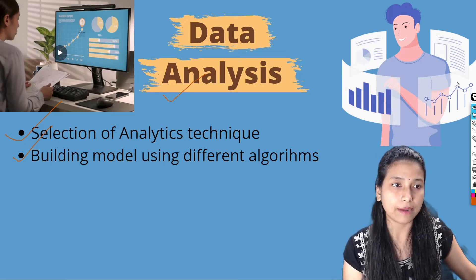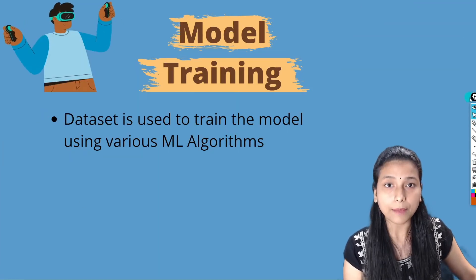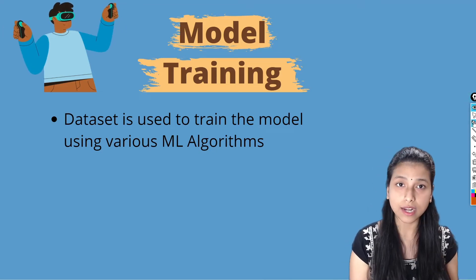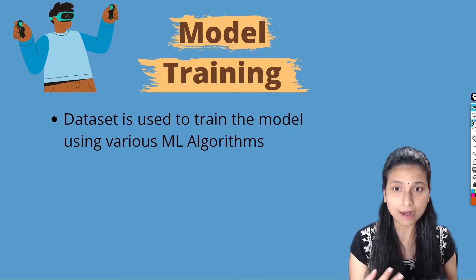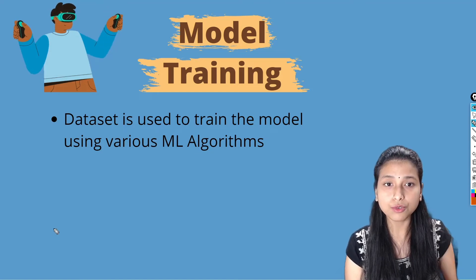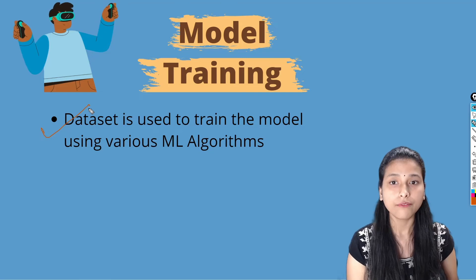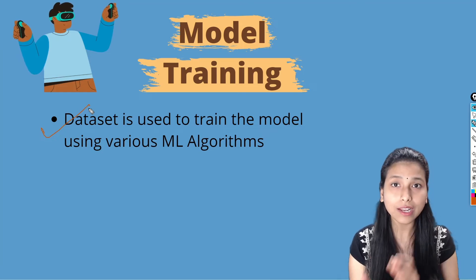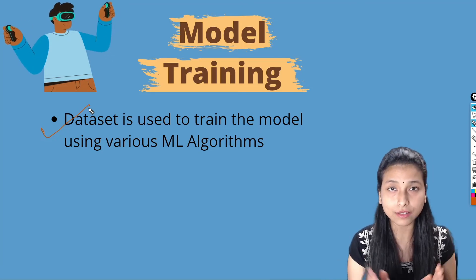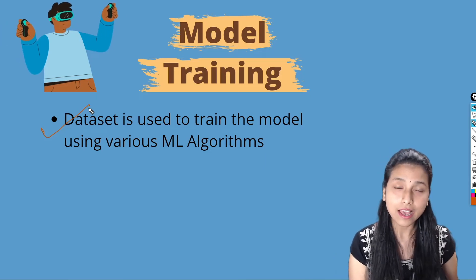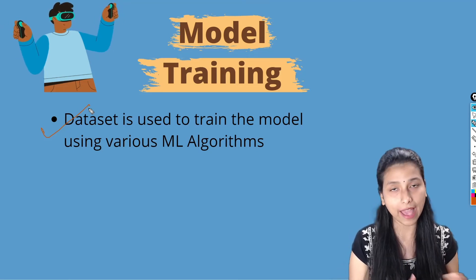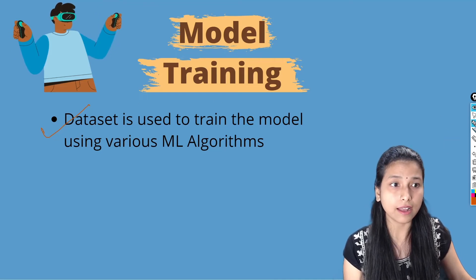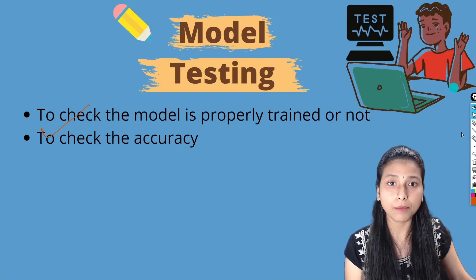The next step is model training. Inside model training, we train the model that we built in the previous steps. The dataset is used to train the model using various ML algorithms. The model is trained by collecting the patterns or information present inside our dataset so that while predicting it can give great results and perform more accurately. After model training is done, the next step is model testing.